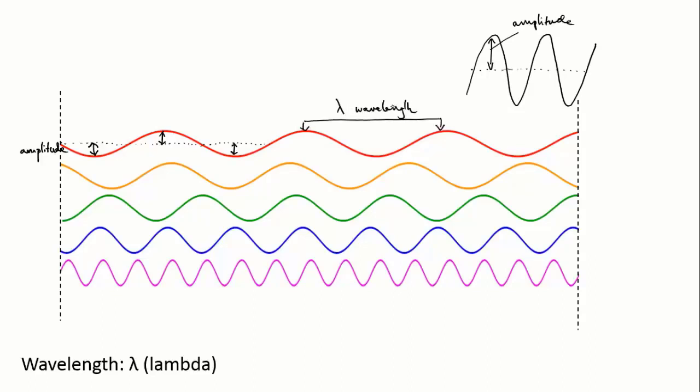The length from crest to crest of a wave, or from trough to trough, is called its wavelength.